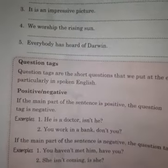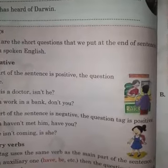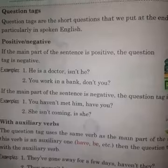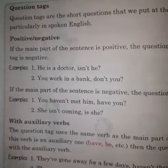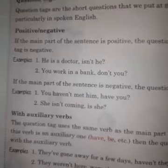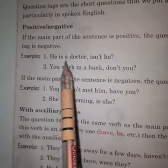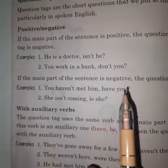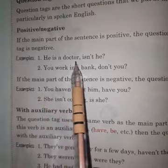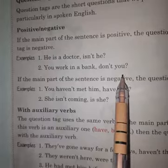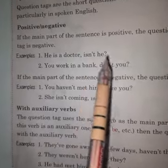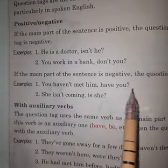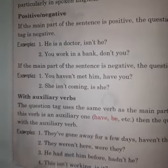Now the next topic is question tags. Question tags are short questions that we put at the end of sentences, particularly in spoken English. If the main part of the sentence is positive, the question tag is negative; if the main part is negative, the question tag is positive. For example: 'He is a doctor, isn't he?' 'You work in a bank, don't you?' When the sentence is negative: 'You have not met him, have you?' 'She is not coming, is she?'